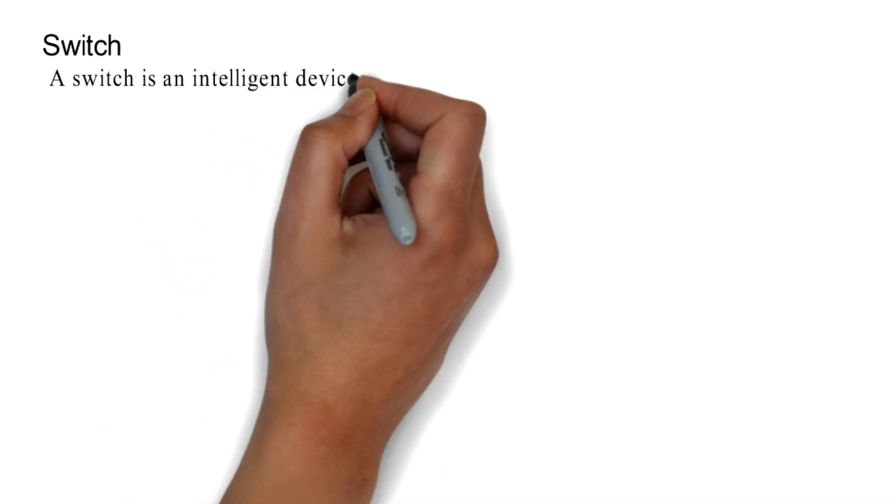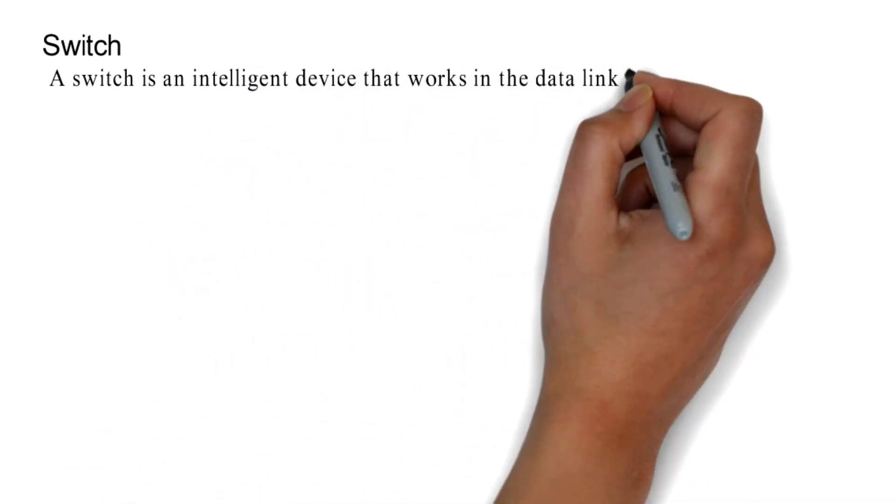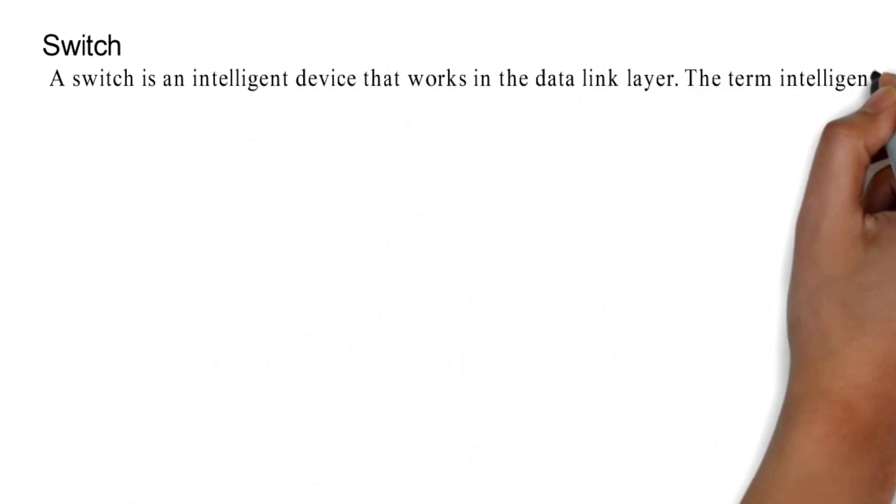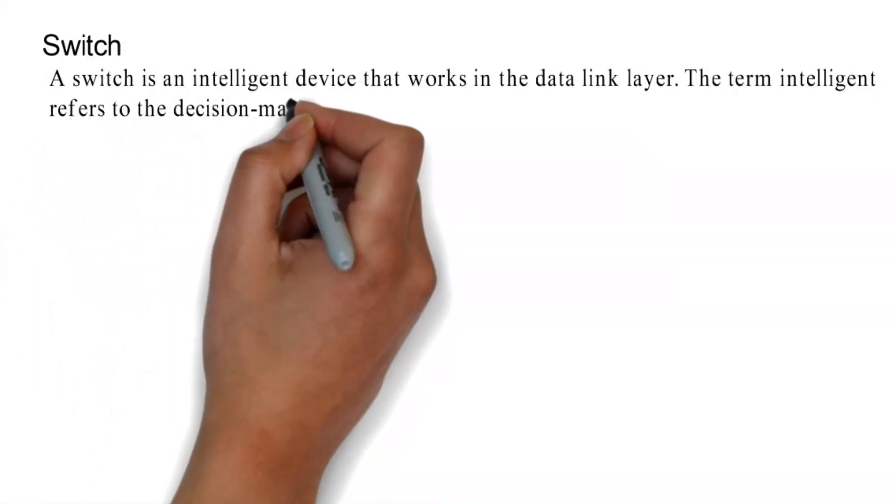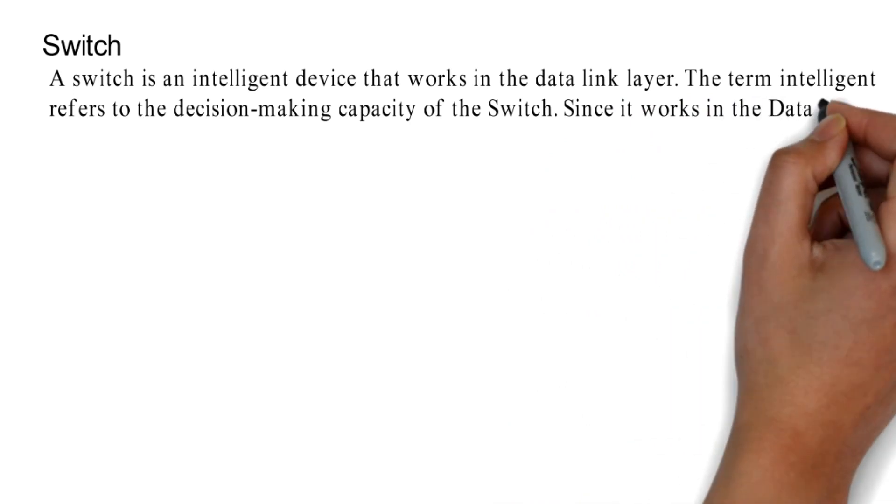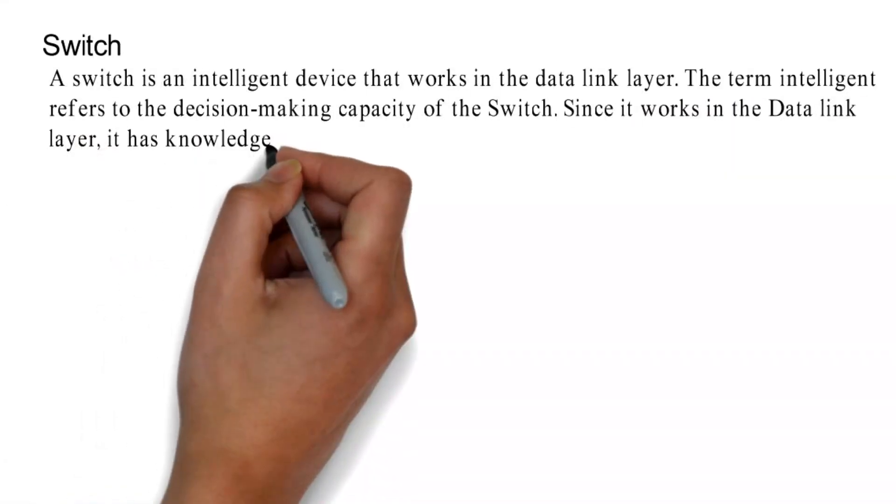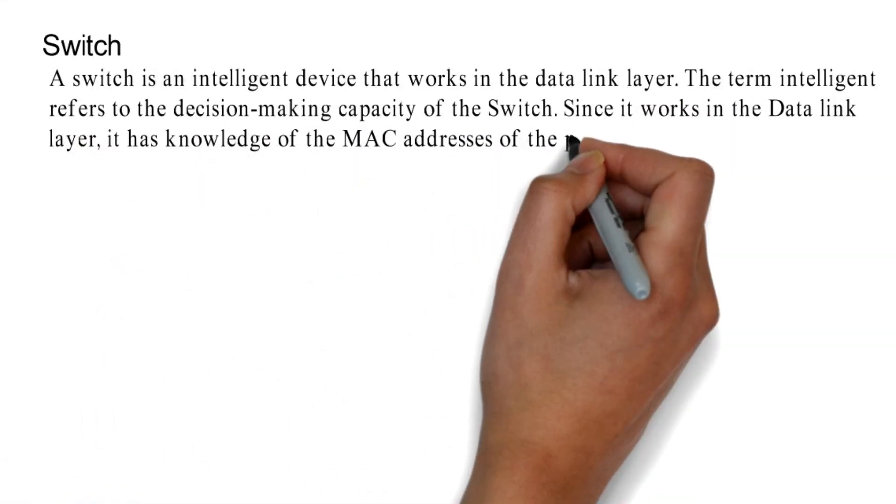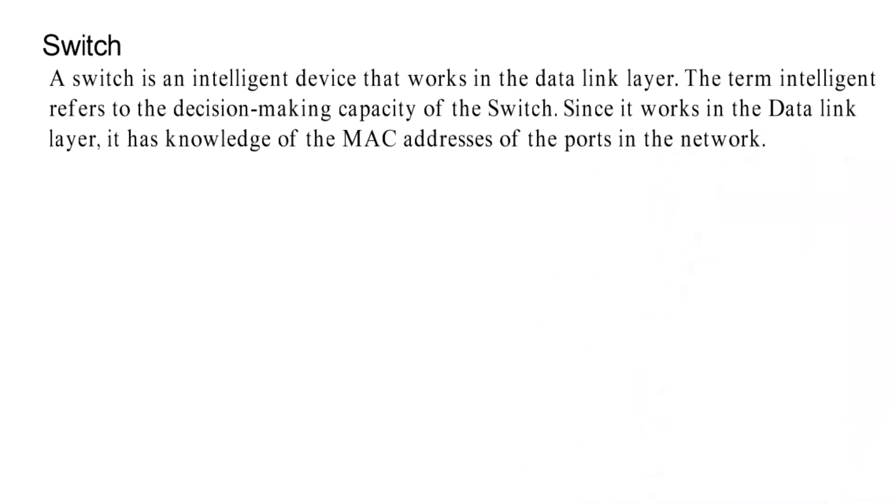Switch. A switch is an intelligent device that works in the data link layer. The term intelligent refers to the decision-making capacity of the switch. Since it works in the data link layer, it has knowledge of the MAC addresses of the ports in the network.